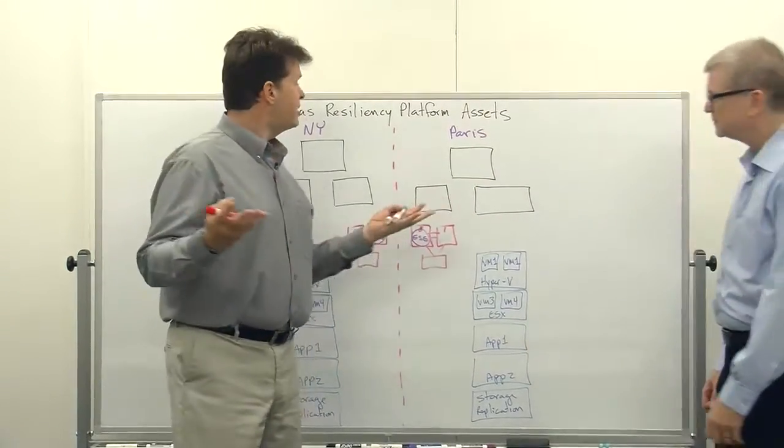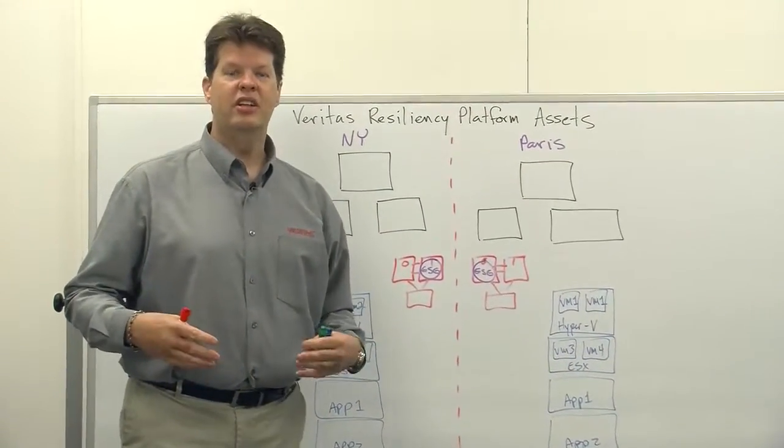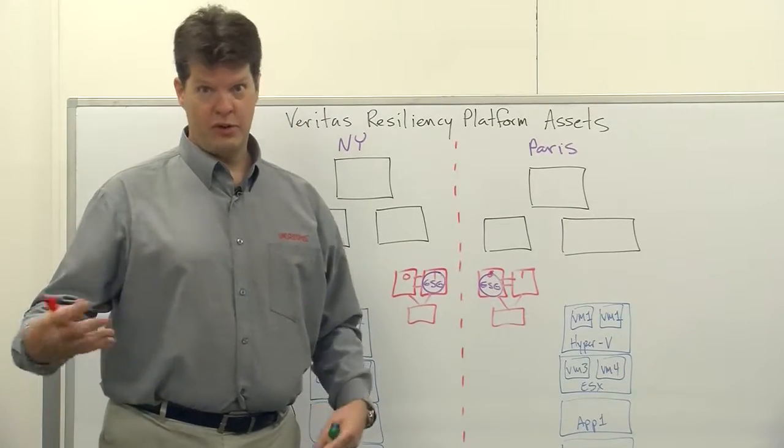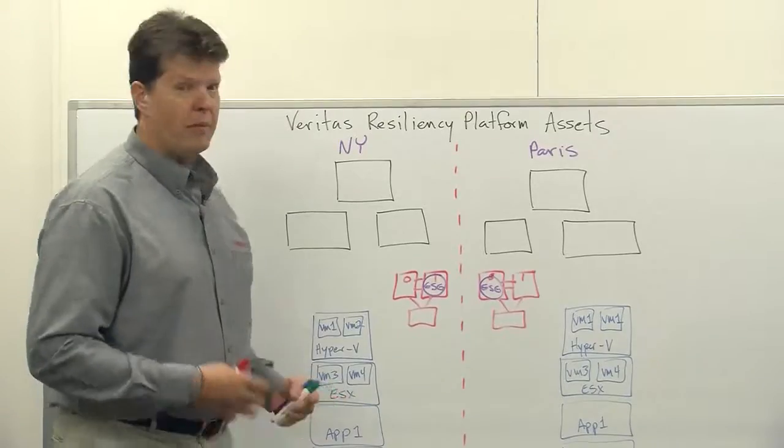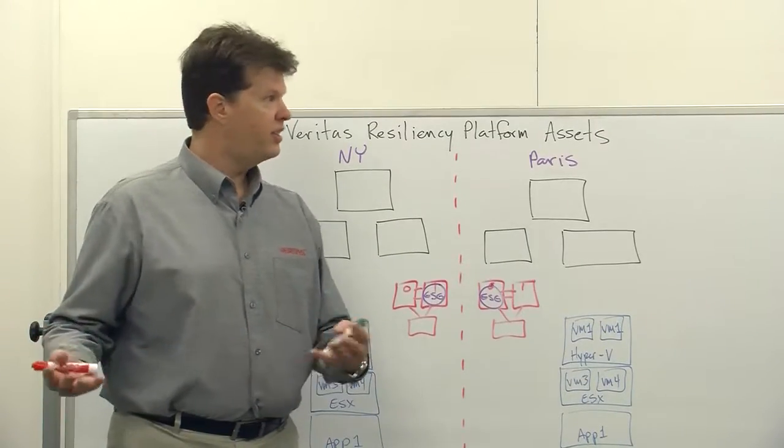All right, I will. So this is basically an overview of the different types of assets or components that we manage in VRP. VRP is our disaster recovery orchestration tool. It gives us the ability to perform migrations, takeovers, and rehearsals from one data center to another.